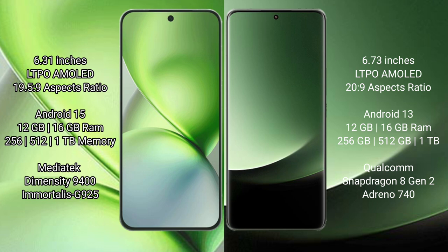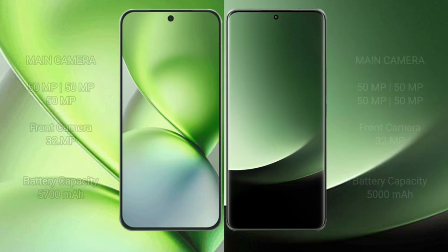Vivo X200 Pro Mini comes with 12GB or 16GB RAM and 512GB or 1TB internal storage, powered by the MediaTek Dimensity 9400 processor. Xiaomi 13 Ultra comes with 12GB or 16GB RAM and 256GB or 512GB or 1TB internal storage, powered by the Qualcomm Snapdragon 8 Gen 2 processor.